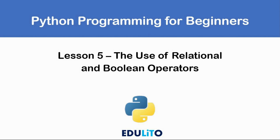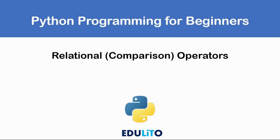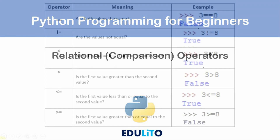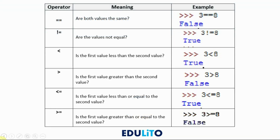Lesson five: the use of relational and boolean operators. Let's start by looking at relational, or sometimes called comparison, operators. We have equals-equals, which is a way in Python to say 'equal to'. We have 'not equal to', which uses an exclamation mark. Then we have 'less than' — less than starts small and gets big — followed by 'greater than', which starts big and gets small. Then we have 'less than or equal to' or 'greater than or equal to'.